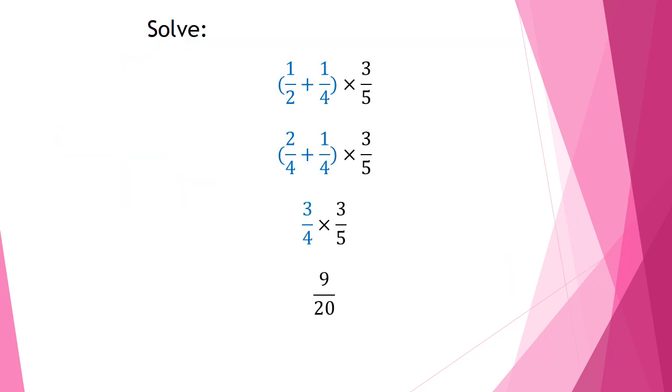The last example that I'm going to solve with you today is half plus quarter between brackets times 3 over 5. According to order of operations, I have to start solving what's inside the brackets. So I have to start ignoring the times 3 over 5.